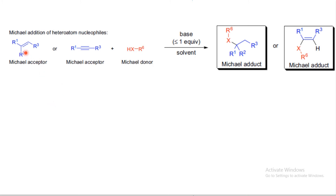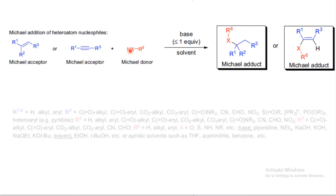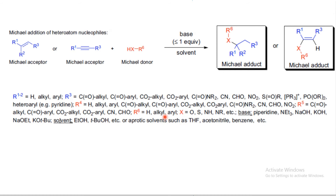In the Michael addition of hetero-nucleophiles, the Michael donors here are hetero-nucleophiles — that is, oxygen, sulfur, amine, or NR groups. In the presence of base, these Michael donors acquire a negative charge and form enolates, which then attack on the alpha-beta unsaturated compounds to form the Michael adduct.